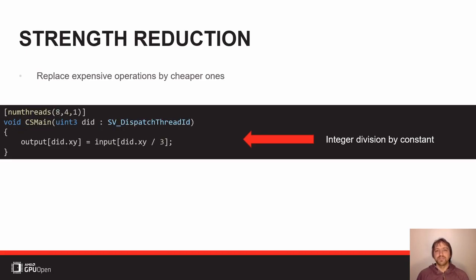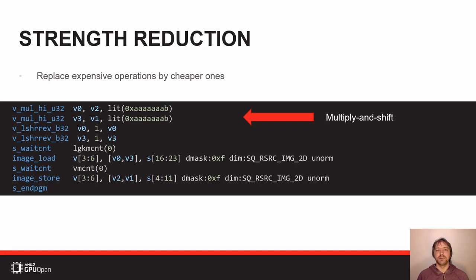Another example: when you have an integer division by a constant, the compiler knows some mathematical magic that allows it to turn the division into a multiply followed by a shift operation. The multiply may not be full rate, but it's still much cheaper than doing an integer division. There is a whole library of strength reductions like this that one can do, and they all help to clean up your program and allow you to express things in higher-level terms.